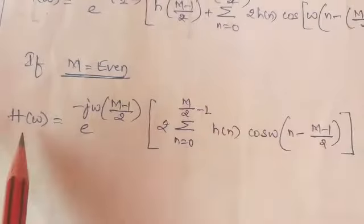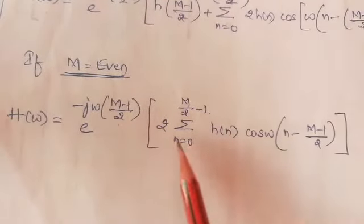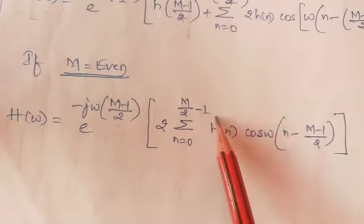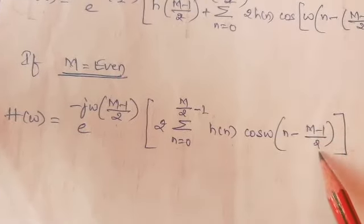If M is even, next case: H(ω) equal to e to the power minus jω(M minus 1) by 2, inside the bracket multiplied by 2 summation over the limits n equal to 0 to M by 2 minus 1, h(n) cosine of ω(n minus (M minus 1 by 2)).